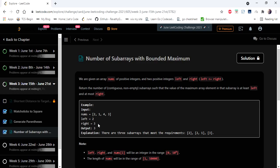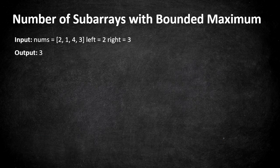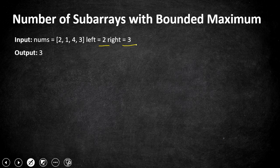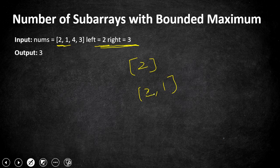Let's understand it with an example. The array integers are 2, 1, 4, 3 and left is 2 and right is 3 — meaning the maximum element in the subarray must be between this range, inclusive. Starting with the very first element 2: 2 is the left value, so 2 alone can form an individual subarray whose maximum element is within the limit. Moving to 1: 1 cannot form a subarray alone as it is out of boundary, but we can form a subarray with 2 and 1 where 2 is the maximum element, which is within the bound.